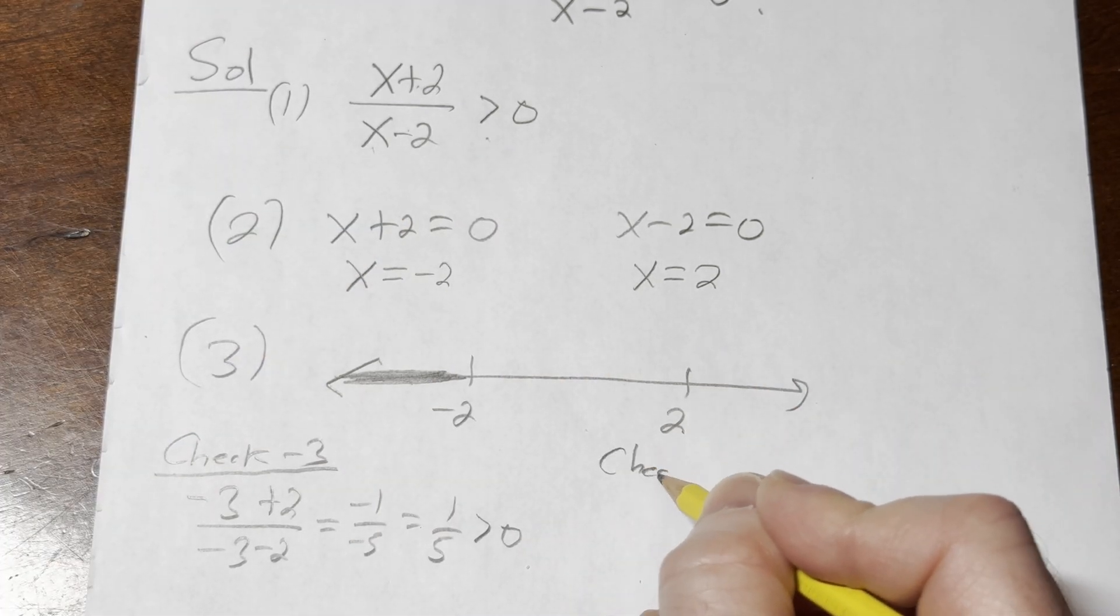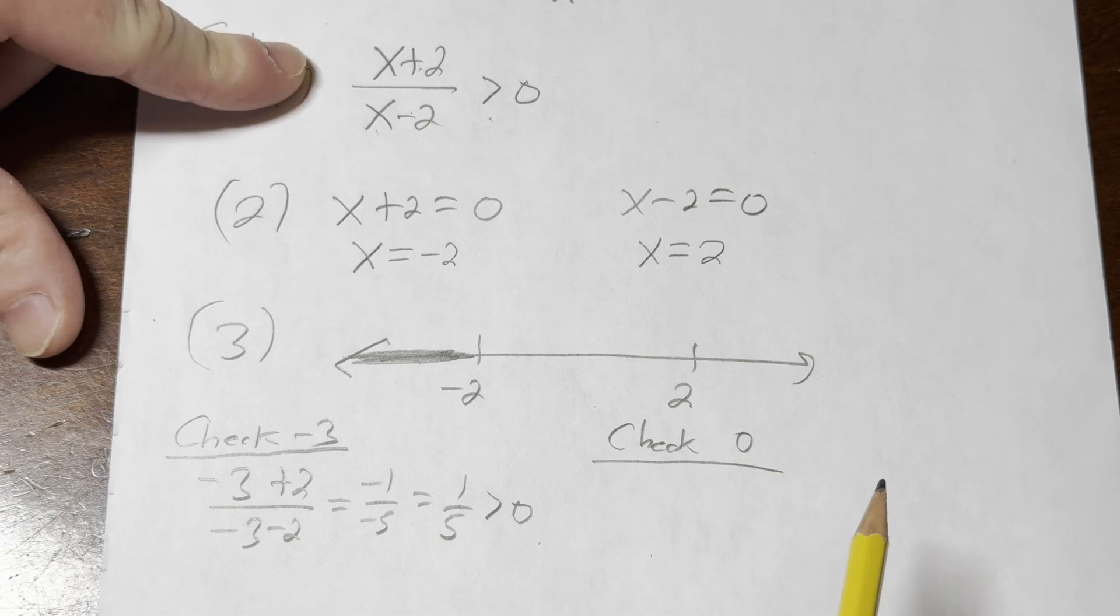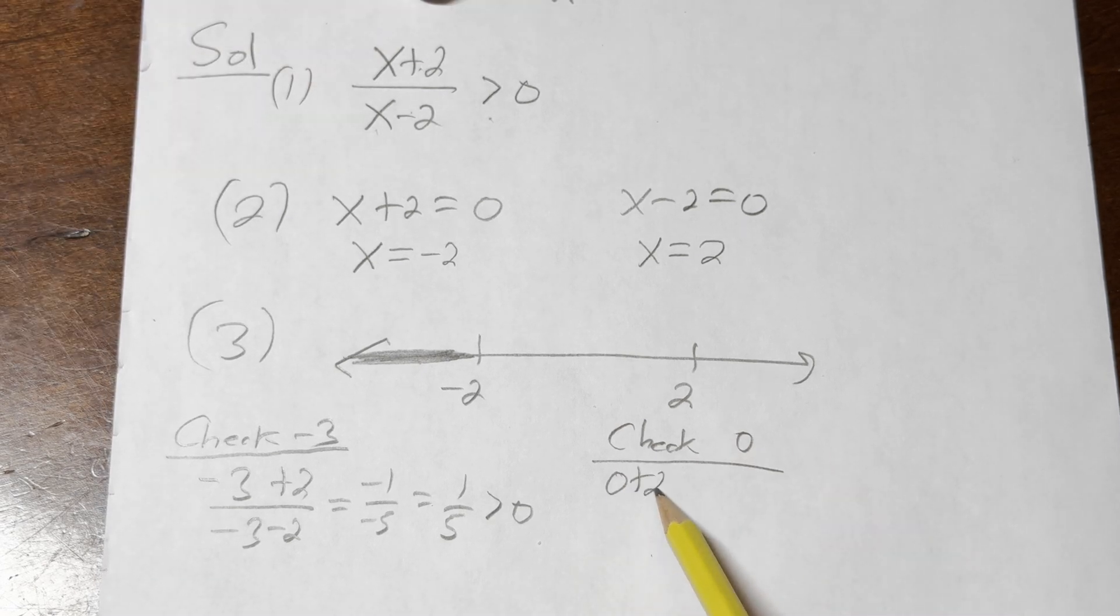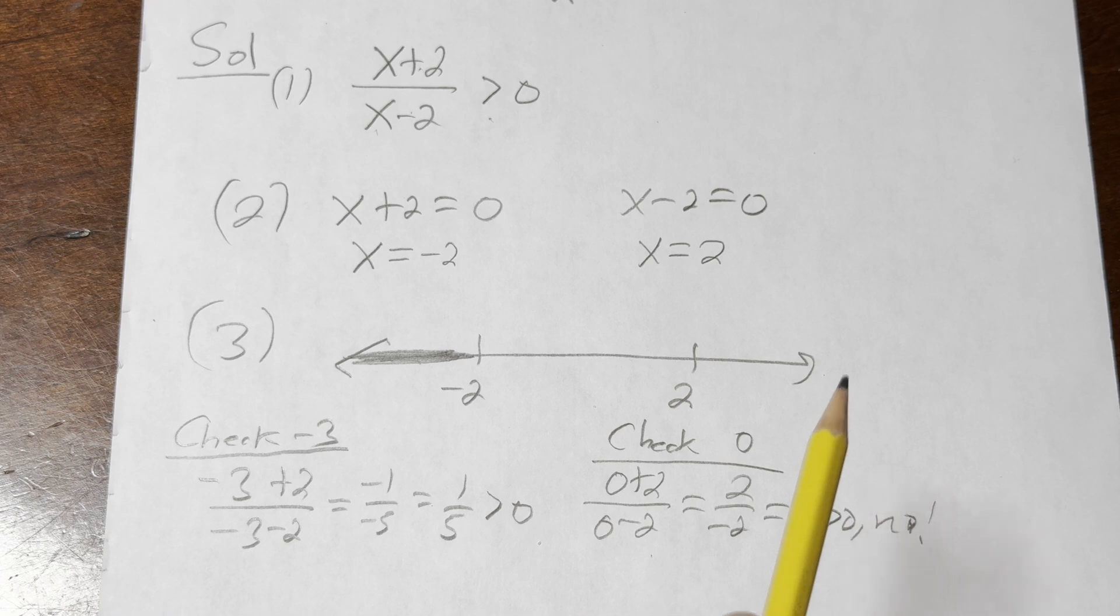Let's check 0. Checking 0, we take the 0, we plug it into the original. So we get 0 + 2 over 0 - 2 so it's 2 over -2 so it's -1. Is that greater than 0? No it's not. So we don't shade. You only shade when it's true.